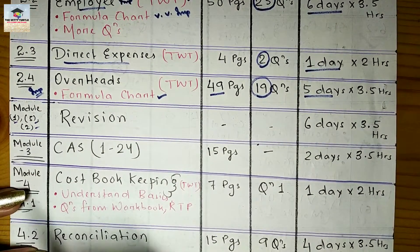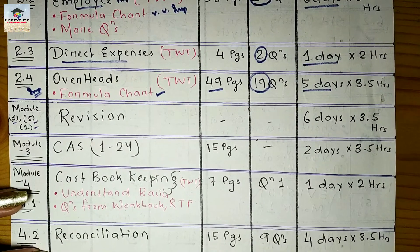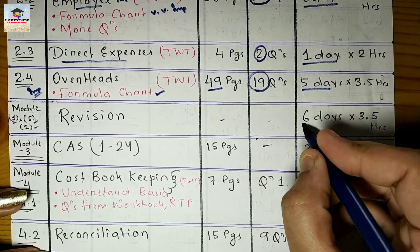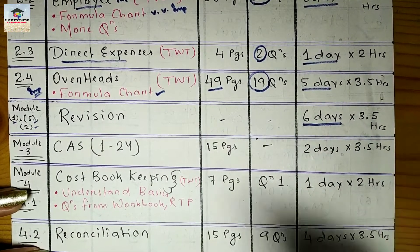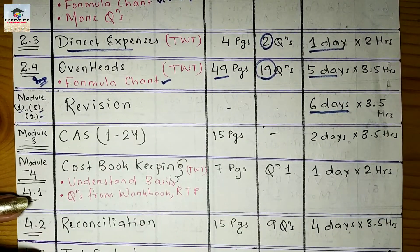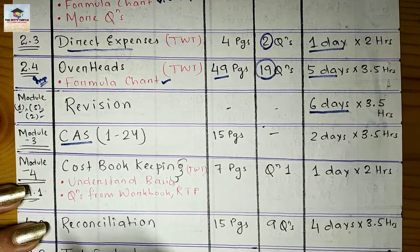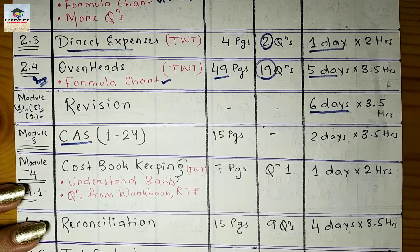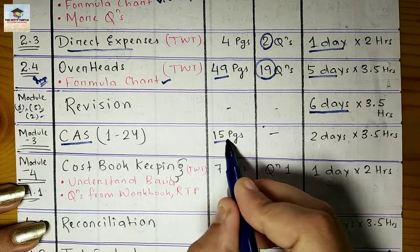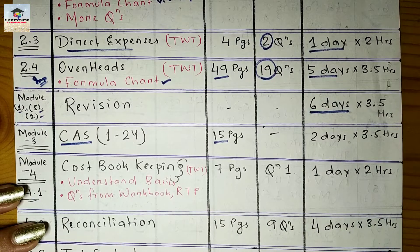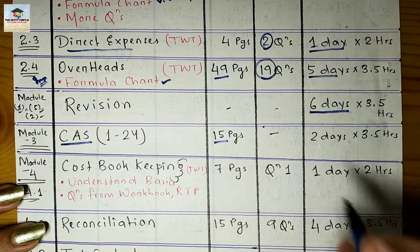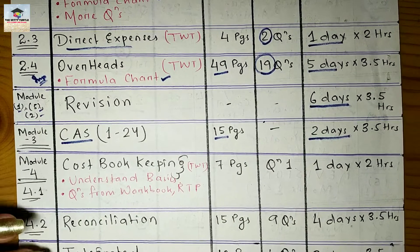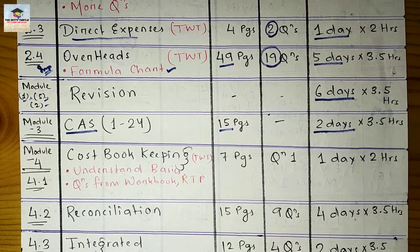After completing Module 2, we do another revision — this time of Modules 1, 5, and 2 (Module 6 has already been revised twice) — taking six days. Next is Module 3, Cost Accounting Standards, which contains 24 standards across 15 pages. This is entirely theory with no numerical questions, and will take two days to complete.